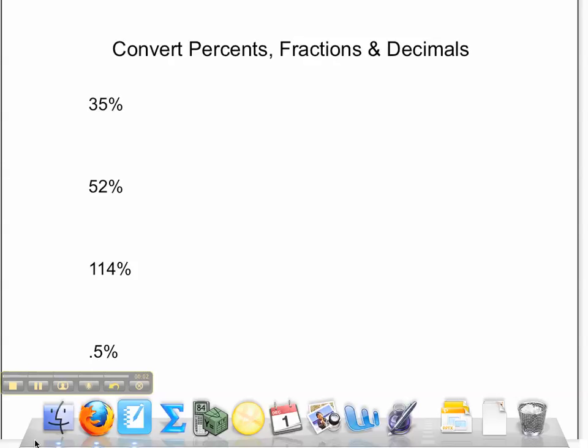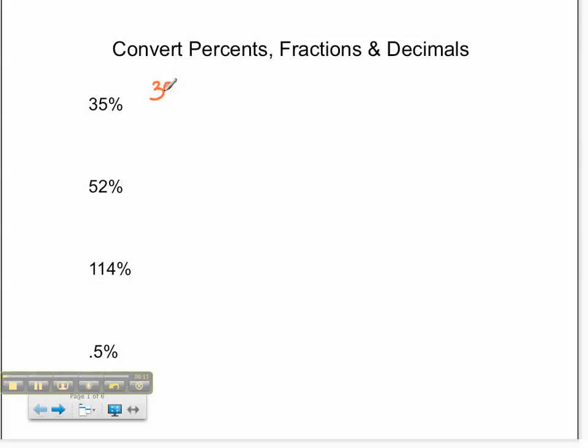Welcome to today's tutorial on converting percents to fractions and decimals. Let's start with 35%. Since we know percent compares things to 100, we know that 35% is written as 35 over 100 as a fraction.